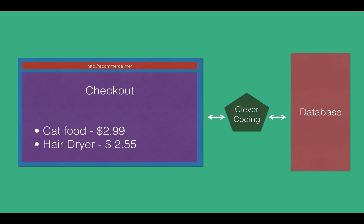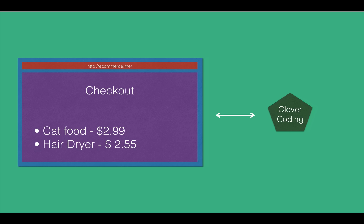From a high level point of view, the programmer has a good name for this clever code. When you bind the database in the presentation, you can find the view of the programmer, the database, and read the data model. You can find the template on the website. Django has a good idea.